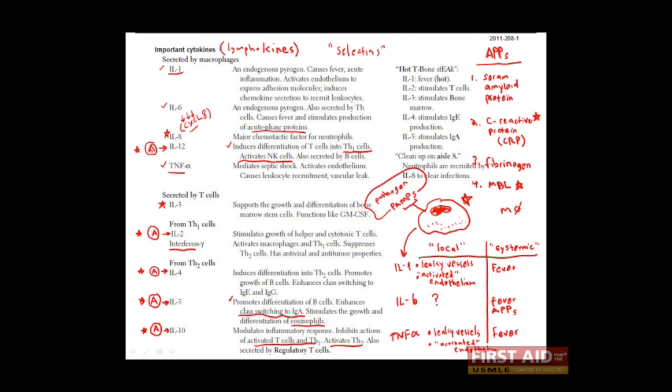Interleukin-3 promotes the growth or proliferation and differentiation of bone marrow stem cells, which I've referred to before in lectures as hematopoietic stem cells. Interleukin-3 functions much like another cytokine you may have heard of, known as GM-CSF, or granulocyte macrophage colony stimulating factor. In fact, interleukin-3 and GM-CSF are structurally related, which may help you to tie things together and remember the role of interleukin-3. Notice, though, that interleukin-3 is produced by T cells and thus happens later in the course of infection.